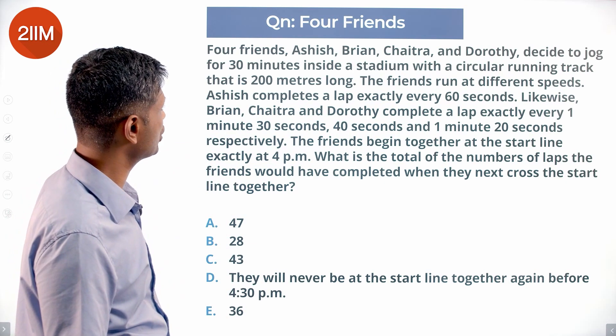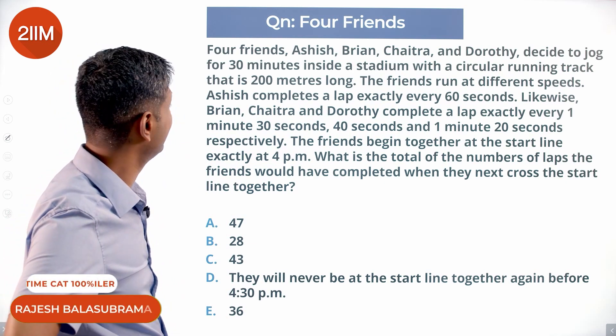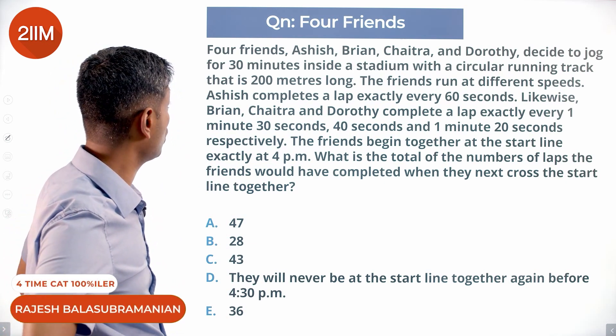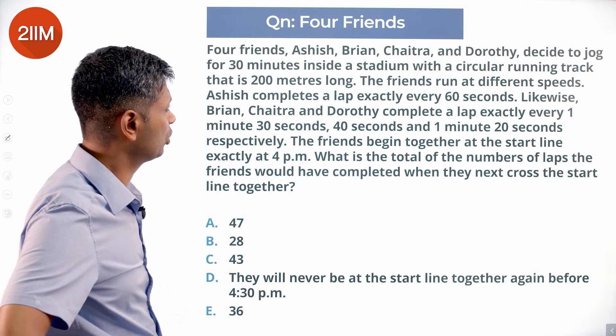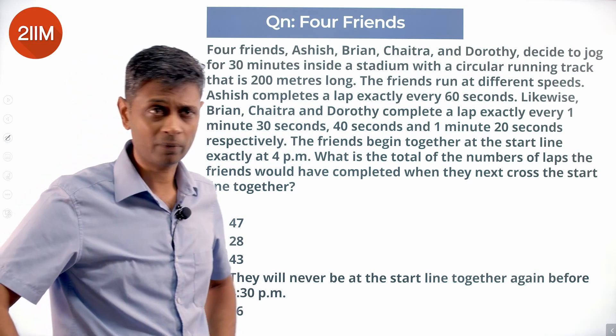Four friends, Ashish, Brian, Chaitra and Dorothy decided to jog for 30 minutes inside a stadium with a circular running track that is 200 meters long.